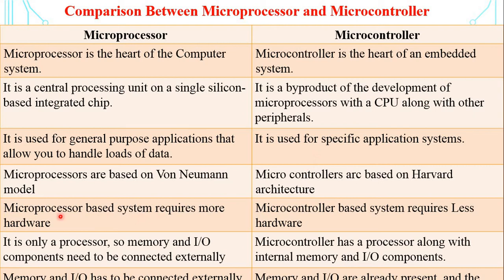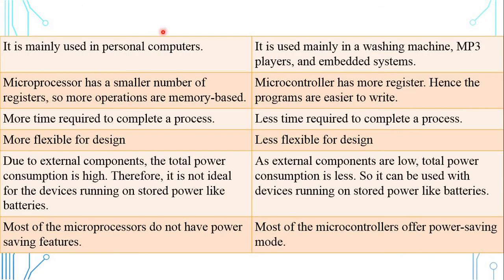A microprocessor-based system requires more hardware, while a microcontroller-based system requires less hardware. In a microprocessor, memory and IO devices need to be connected externally. In a microcontroller, the processor, internal memory, and IO components are all built in on the same IC chip. Microprocessors are mainly used in personal computers, whereas microcontrollers are used mainly in washing machines, MP3 players, and embedded systems.